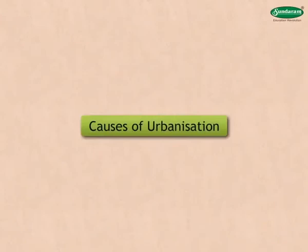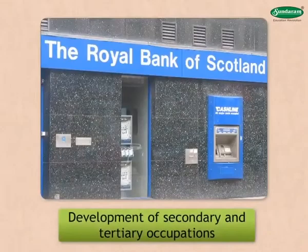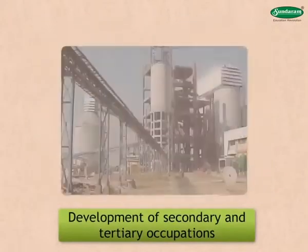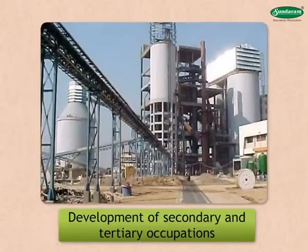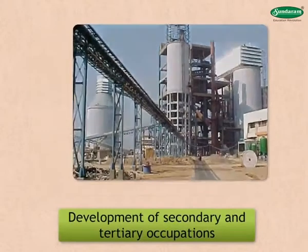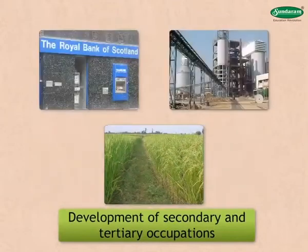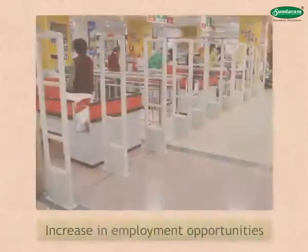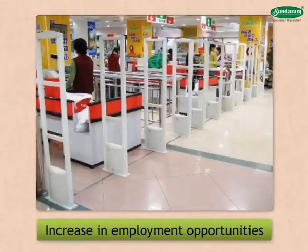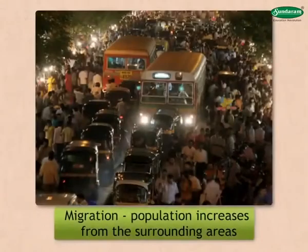The causes of urbanization include development of secondary and tertiary occupations supporting the primary occupations, increase in employment opportunities, and migration of people from the surrounding areas leading to an increase in population.